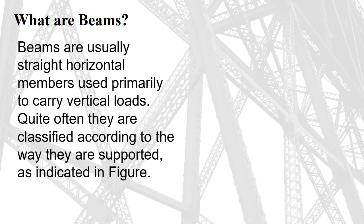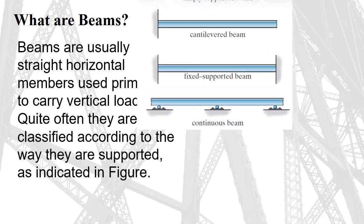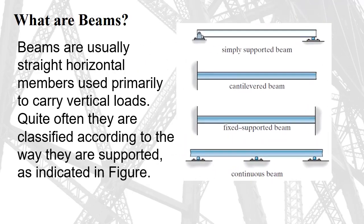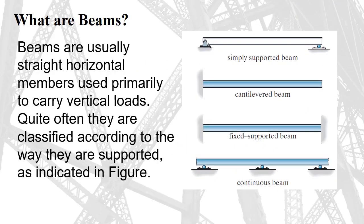What are Beams? Beams are usually straight horizontal members used primarily to carry vertical loads. Quite often they are classified according to the way they are supported, as indicated in the figure.